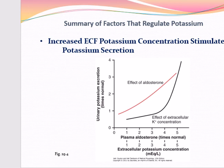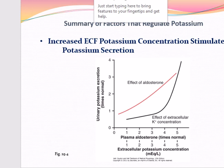The factors that regulate potassium secretion include the effect of plasma aldosterone concentration and extracellular potassium ion concentration on the rate of urinary potassium excretion. These factors stimulate potassium secretion by the principal cells of the cortical collecting ducts.